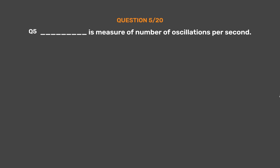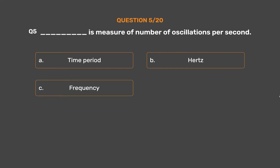Question number 5. Underscore is a measure of number of oscillations per second. Option A, Time period; Option B, Hertz; Option C, Frequency; Option D, None of these.